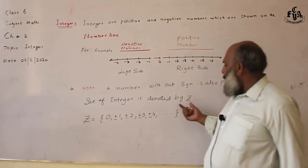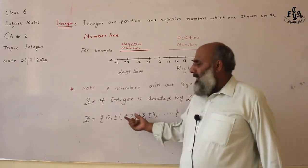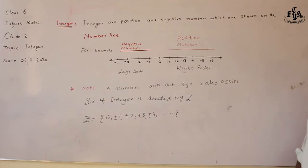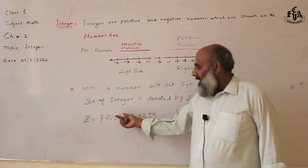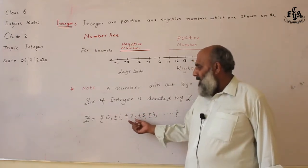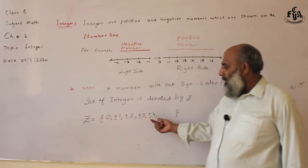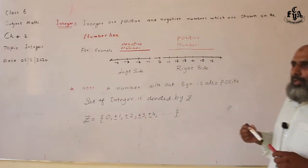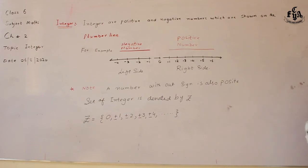The set of integers is denoted by Z. We can also denote integers with capital Z. The set includes: zero, plus-minus one, plus-minus two, plus-minus three, plus-minus four. Integers include both positive numbers and negative numbers.